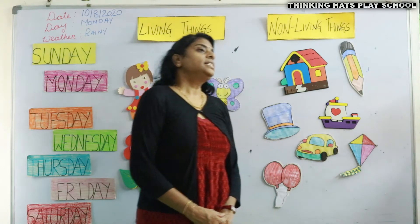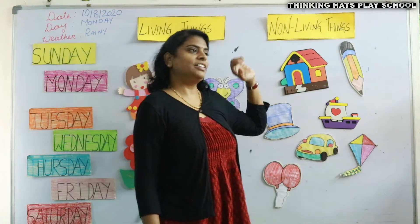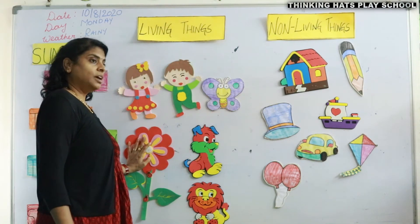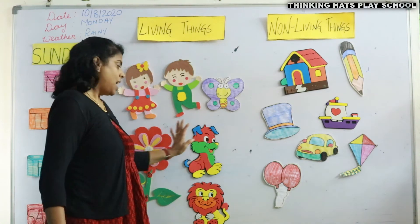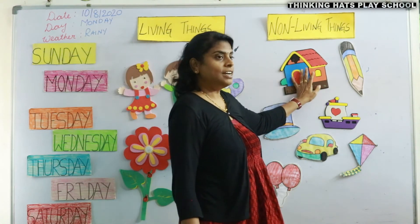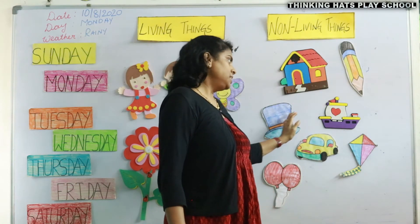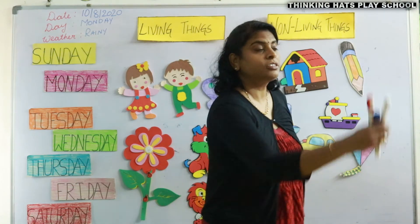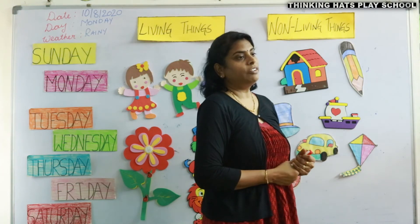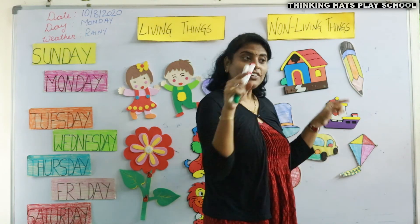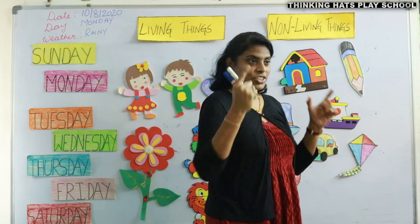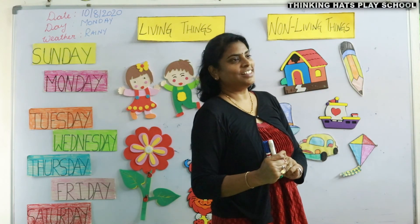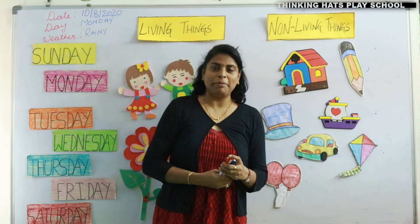Just take out your book and see what are living things. Living things are people, birds, flowers — I mean flowers means a tree — and animals. Non-living things are house, pencil, hat, ship, balloon, car, kite. Many things like these markers are also non-living things. The furniture is non-living, fan is non-living, TV is non-living. So take out your book and draw a picture of living things and non-living things. I am going to check those things. Bye-bye.